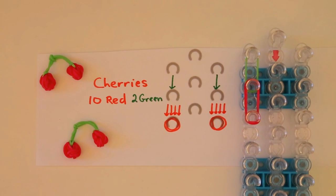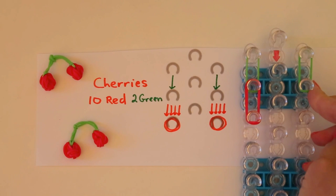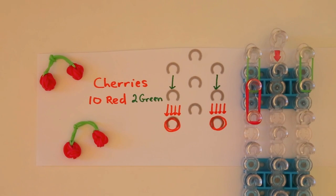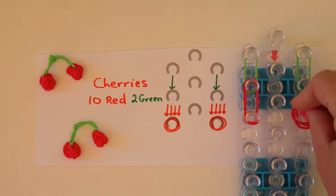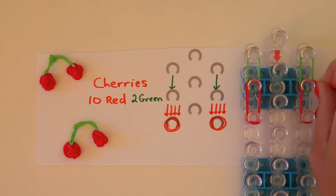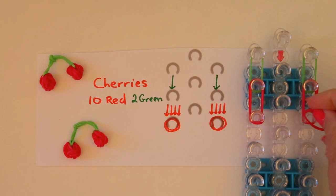And then we'll repeat on the other side to create the second cherry. A single green followed by four red bands and then a single red band wrapped around this peg three times.